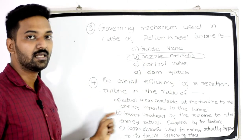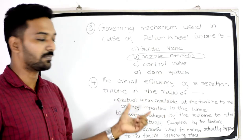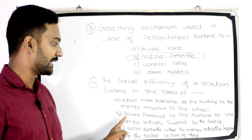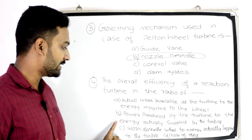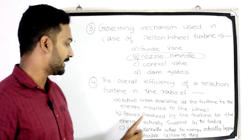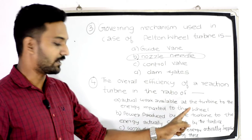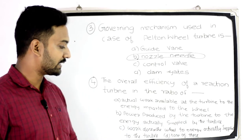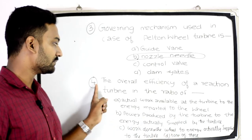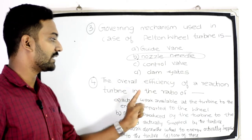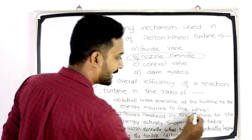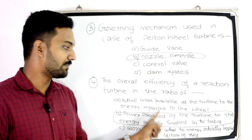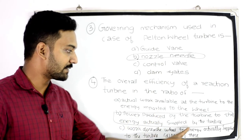The fourth question is: the overall efficiency of a reaction turbine is the ratio of which of the following? Options: actual work available at the turbine to energy imparted to the wheel; power produced by the turbine to the energy actually supplied by the turbine; work done on the wheel to energy actually supplied to the turbine; or none of these. The answer is: power produced by the turbine to the energy actually supplied by the turbine.